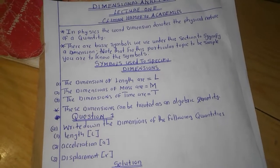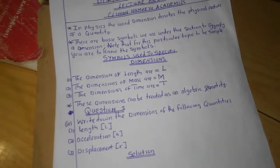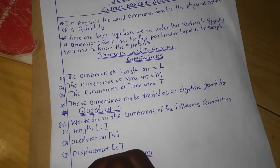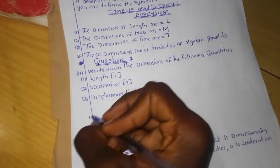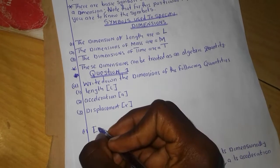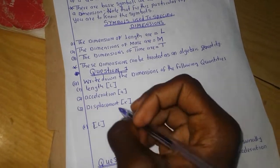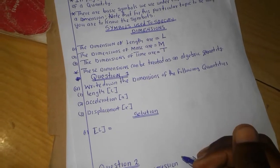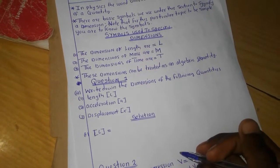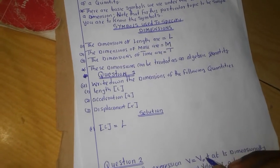I'm about to write something here so that you'll be able to see how we treat these things. We are asked to write the dimensions of length. We simply use brackets to signify a dimension. We know that length is measured in meters, so each dimension is just going to be a big letter L.